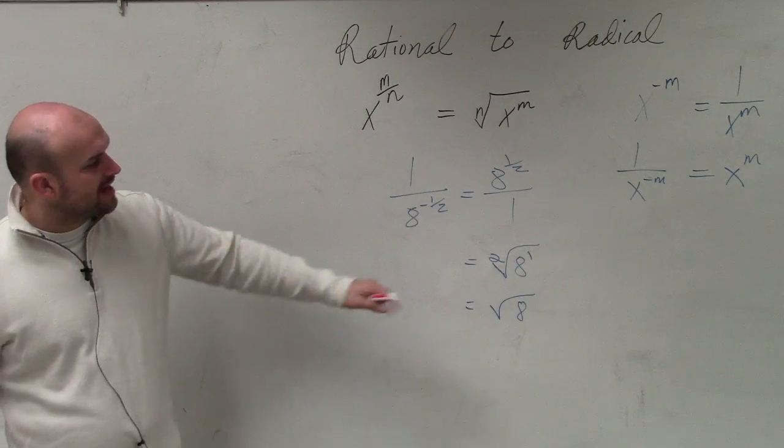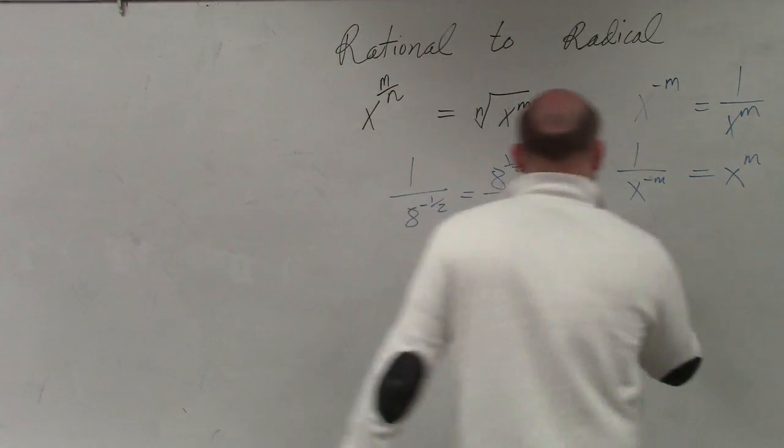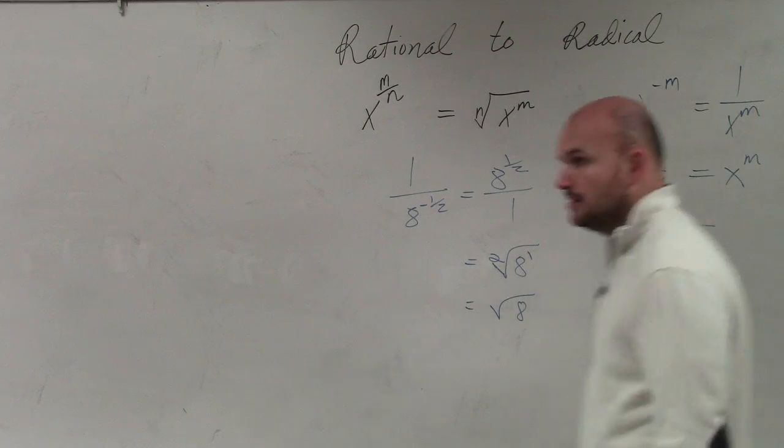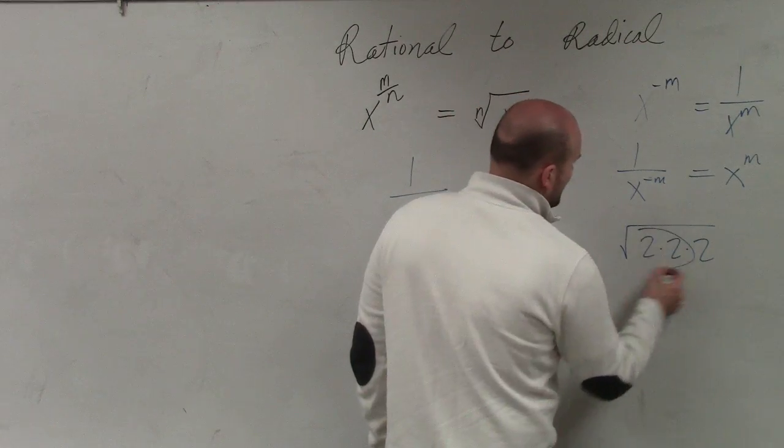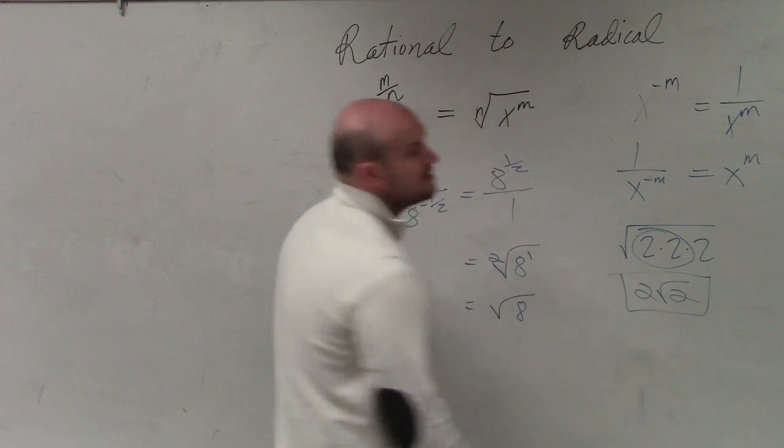And then hopefully, you also remember that the square root of 8 can be simplified. If you remember, if we were going to write this as the product of prime factors, that would be 2 times 2 times 2, where we can pull out a pair of 2's. So the simplified answer would be 2√2.